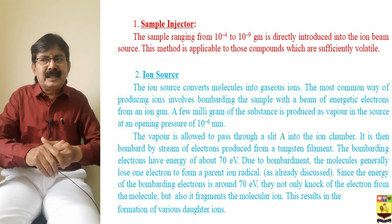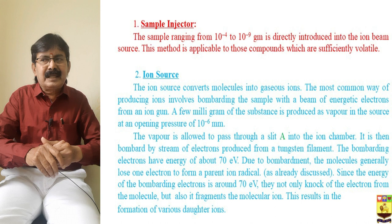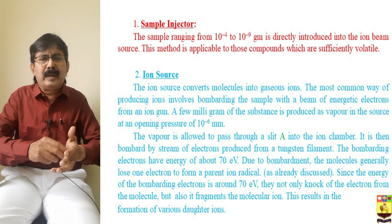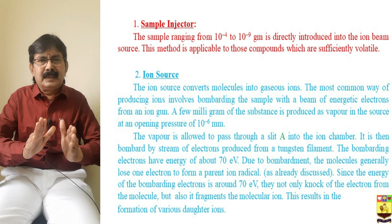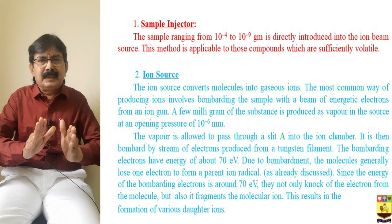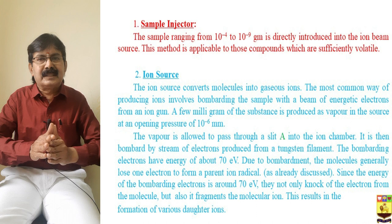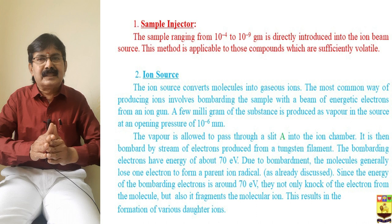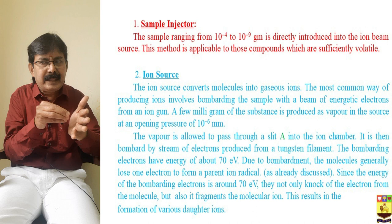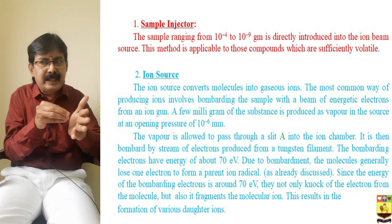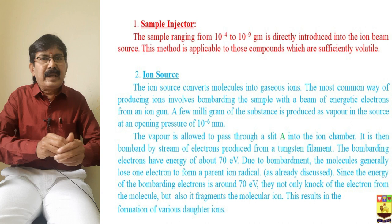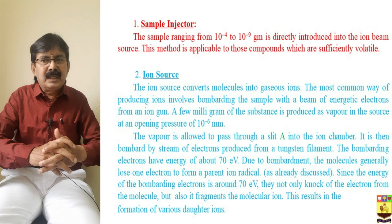The sample ranging from 10⁻⁴ to 10⁻⁶ grams is directly introduced into the ion beam source. This method is applicable for compounds that are sufficiently volatile, soluble, and highly volatile — the main condition is that the molecules must be in the gaseous phase. The ion source converts a molecule into gaseous ions. A few milligrams of substance is produced as vapor in the source at an operating pressure of 10⁻⁶ mmHg.